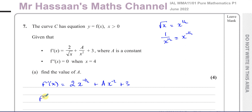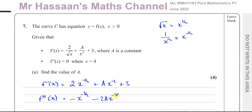If I differentiate this to find the second differential — because this is the first differential — I multiply by the power: negative 1/2 times 2 gives minus 1, and taking 1 from the power gives X to the negative 3/2. Then multiplying by the power gives negative 2A, and taking 1 from the power gives X to the negative 3. The constant 3 disappears when differentiated.